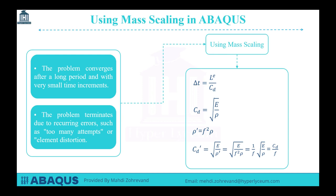In such situations, we use a technique called mass scaling. I want to explain what mass scaling formulation is, and then we will apply it in Abacus software and investigate its effects on our simulation. As I explained before, we have a parameter called minimum time increment, indicated as delta t. Our time increment is equal to L, the specific length of our element, divided by C, which is the wave speed in our material.